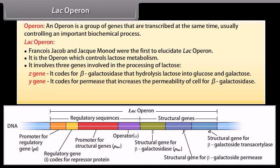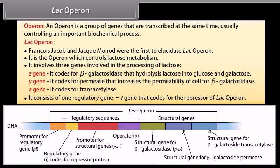The Y gene codes for permease that increases the permeability of the cell for beta-galactosidase. The A gene codes for transacetylase. It also consists of one regulatory gene, the I gene, that codes for the repressor of the lac operon.